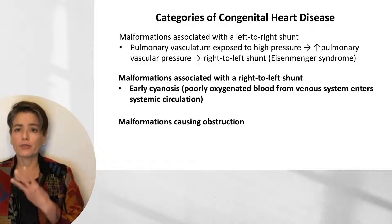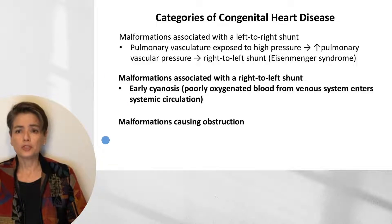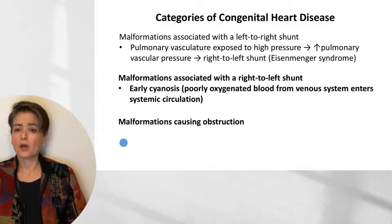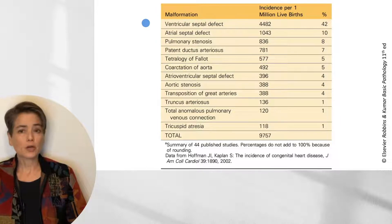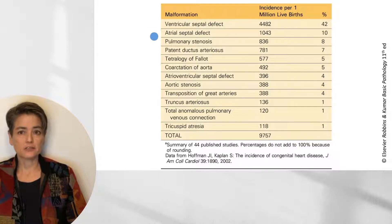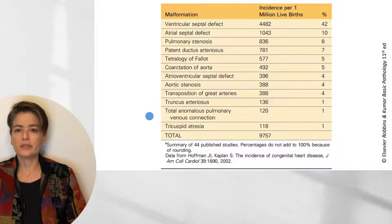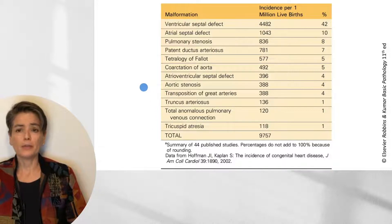As you recall from that earlier video, there are three categories of congenital heart disease. I'll be covering malformations associated with a right-to-left shunt, which are characterized by early cyanosis due to the introduction of poorly oxygenated blood from the venous system into the systemic circulation, as well as the malformations causing obstruction. This is a table from Robbins and Kumar Basic Pathology showing the relative incidence of various cardiac defects. The left-to-right shunts — ventricular septal defect and atrial septal defect — are much more common than the right-to-left shunts, which include tetralogy of Fallot, transposition of the great arteries, truncus arteriosus, total anomalous pulmonary venous return, and tricuspid atresia. Although less common, it's critical to understand the pathophysiology, and by doing so, you will cement your understanding of cardiovascular physiology.